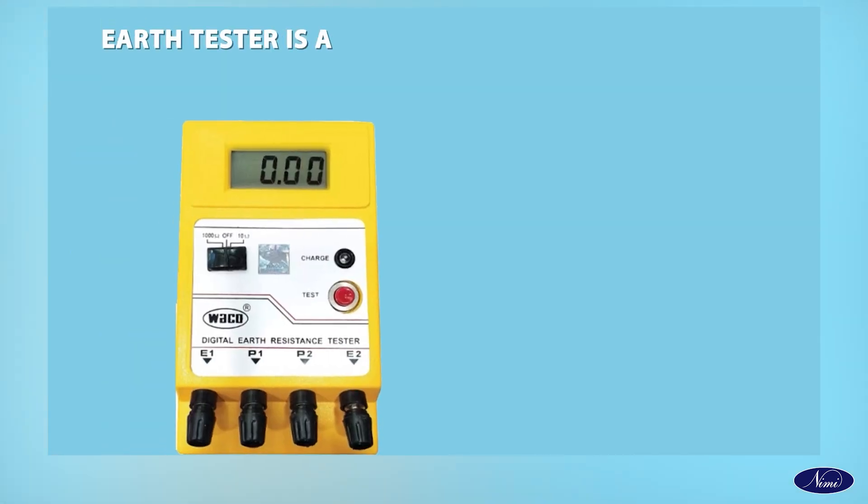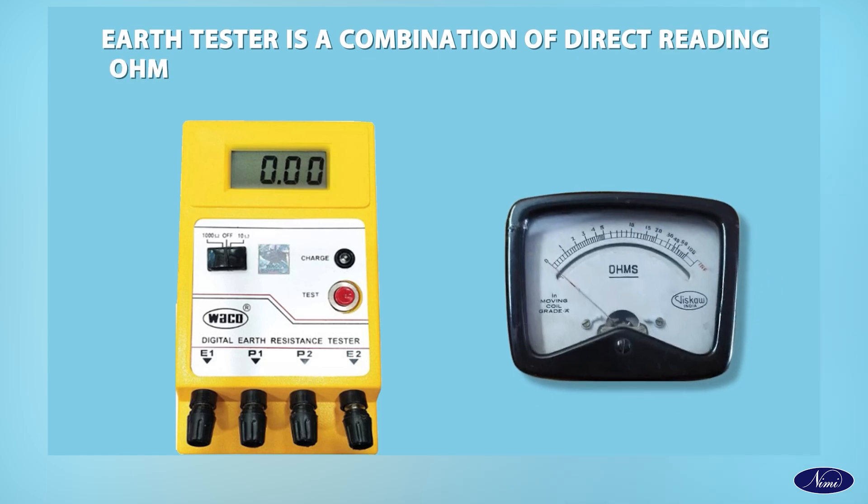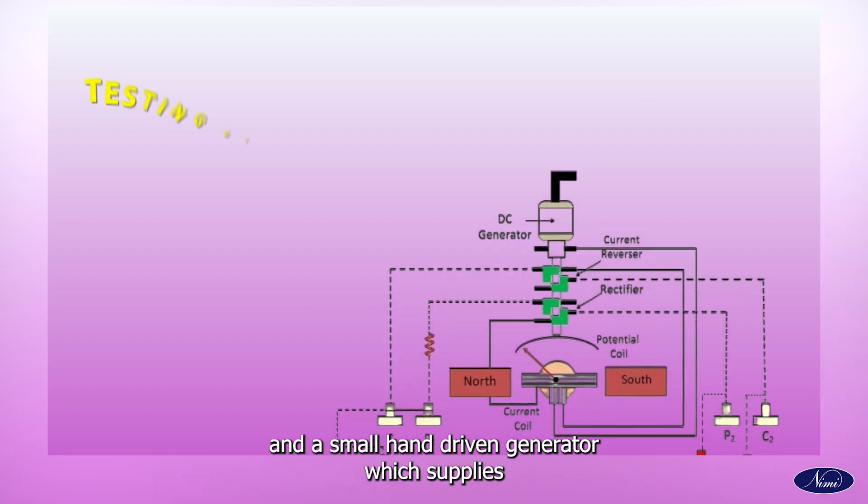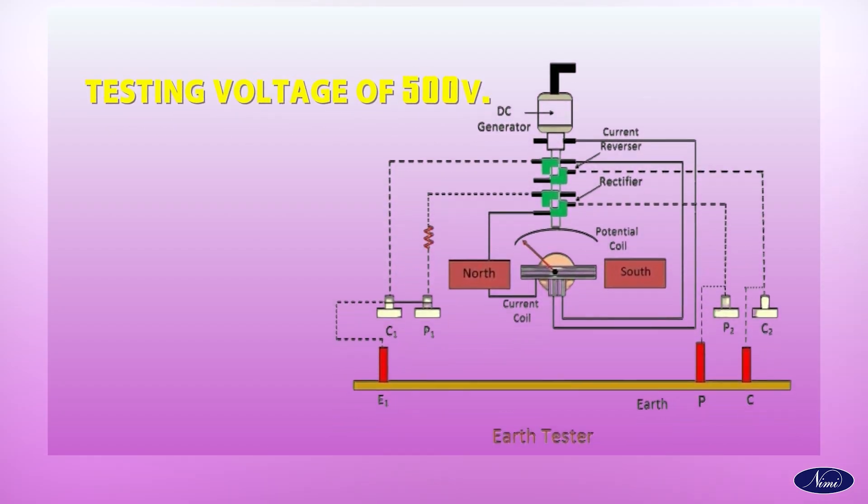The Earth Tester is a combination of direct reading Ohm meter and a small hand-driven generator which supplies the testing voltage of 500 volts. It has provision to connect to the Earth with electrodes.